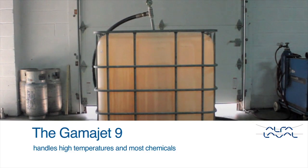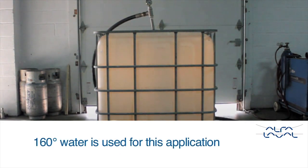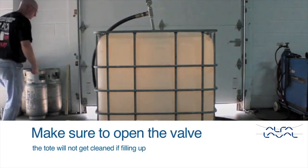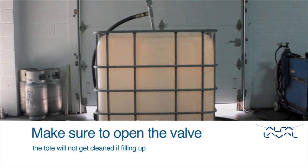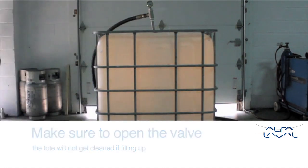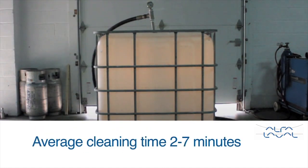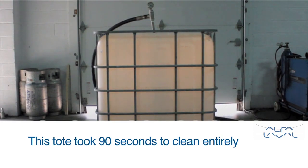The GammaJet 9 can handle high temperatures and a wide variety of chemicals. For this application, we used only hot water. You want to make sure the drain valve is open so the tote does not fill up or prevent cleaning. The average cleaning time for most totes is 2 to 7 minutes, but this tote only took 90 seconds.